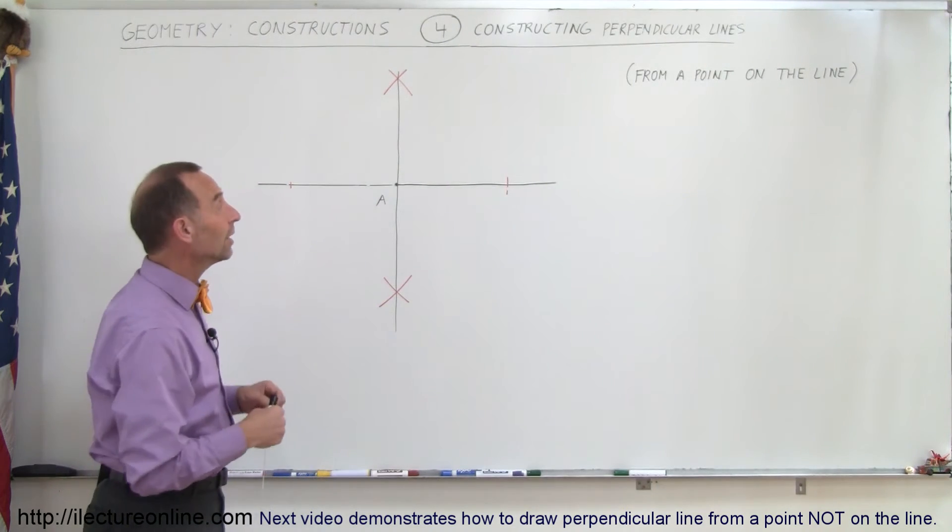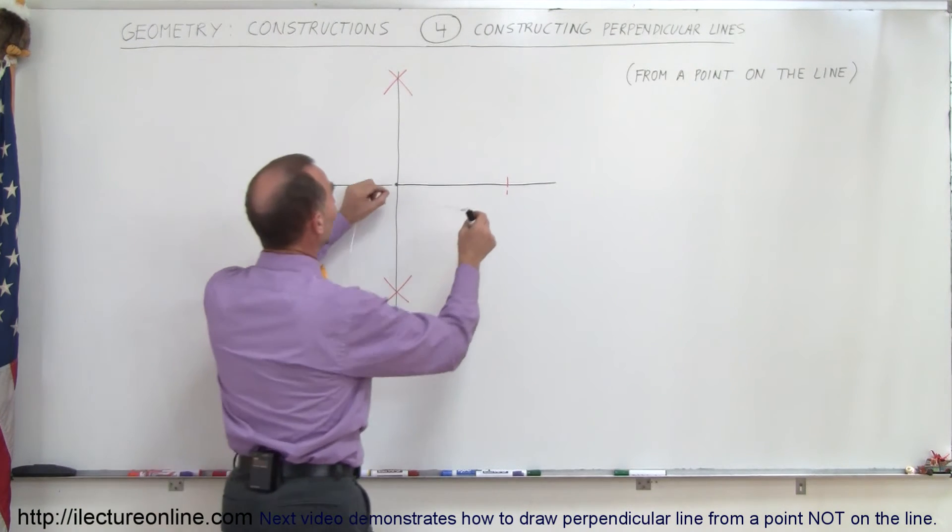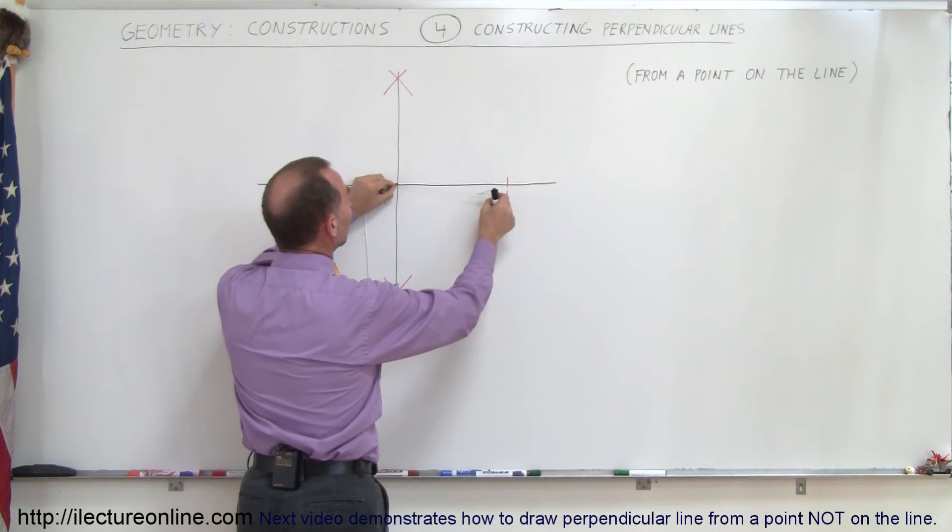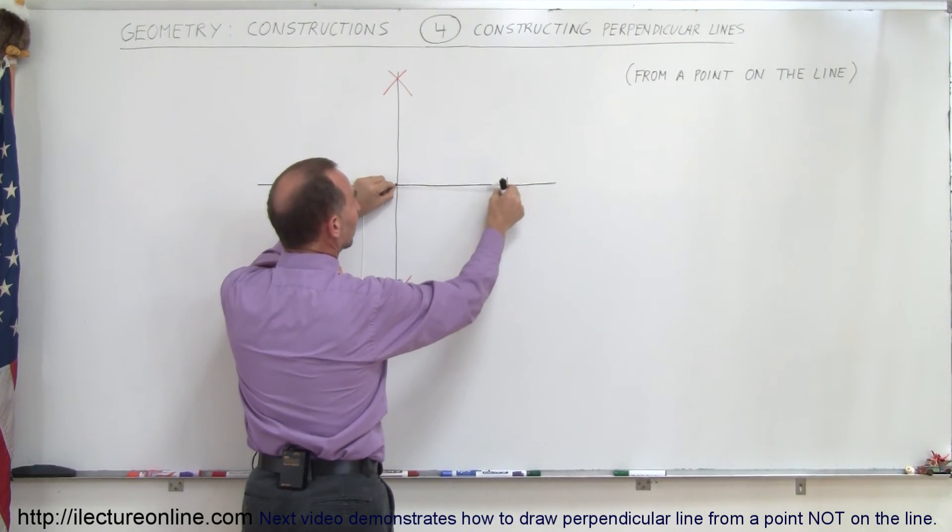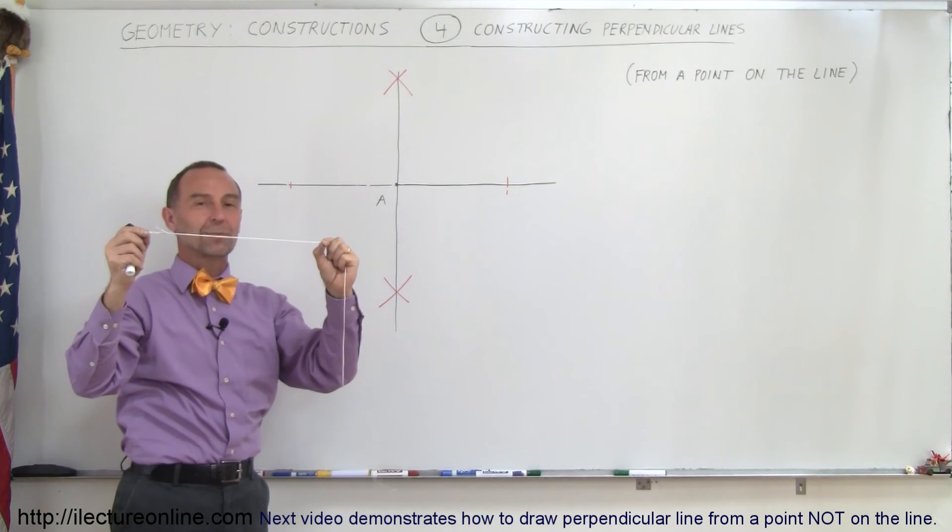So in summary, how do you draw a perpendicular line? You get your compass, put it on the point through which you want the perpendicular line to go. Draw a little arc right there, come around the other side, draw a little arc right there, then increase the size of your compass.